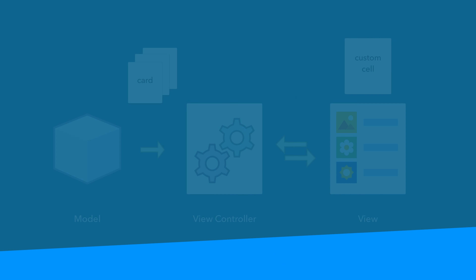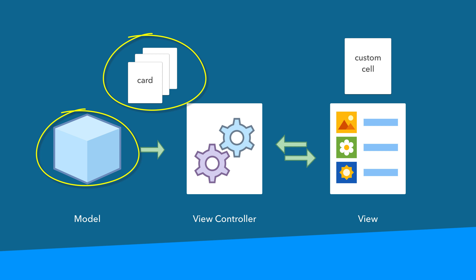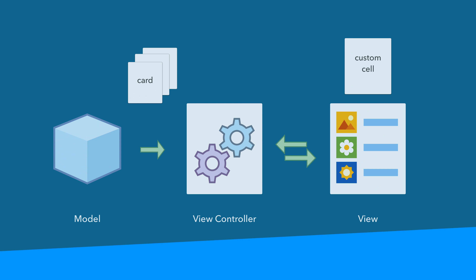Hello and welcome. In this lesson, we're going to get hands on with creating custom classes. If you take a look at our app architecture diagram, you'll see some classes that we have to create, namely the card model class and the card class. We're also going to create a custom collection view cell so that we can add some custom functionality to it. Let's dive into Xcode and get started.